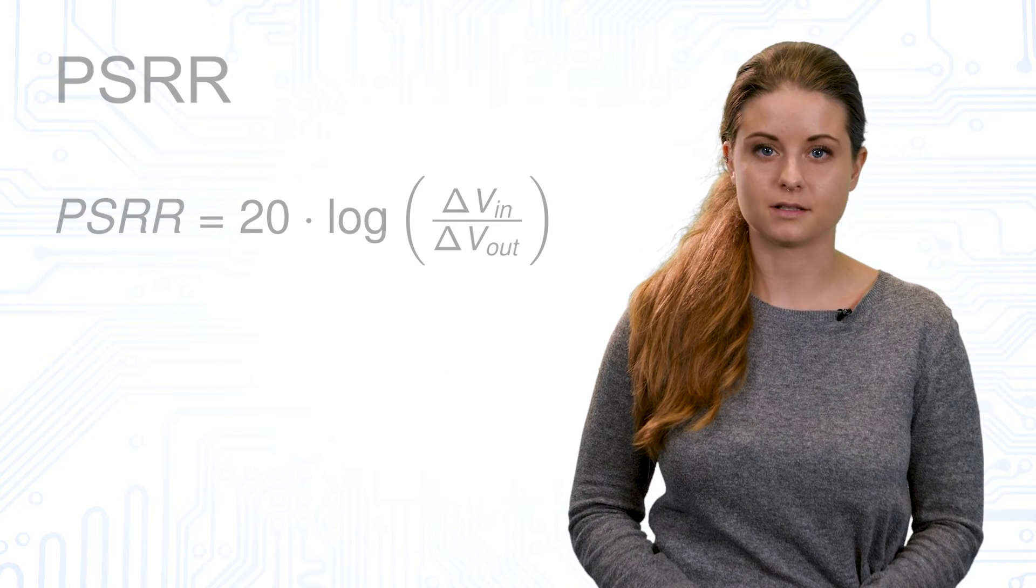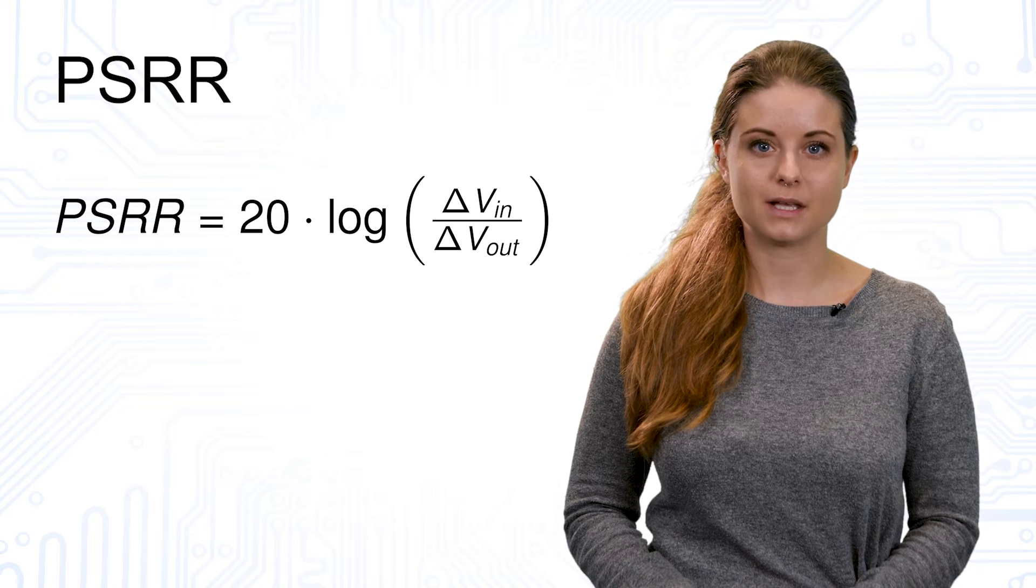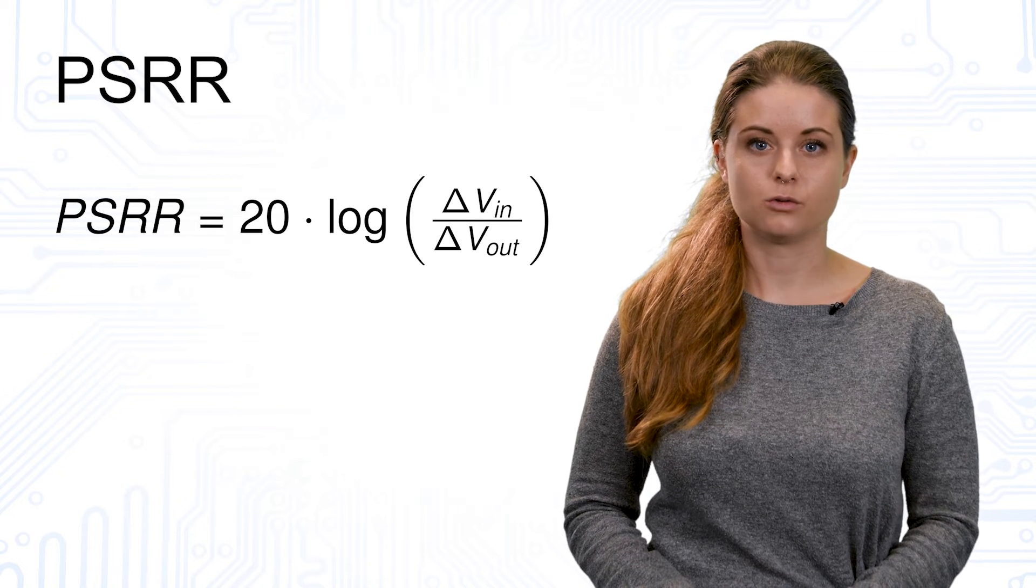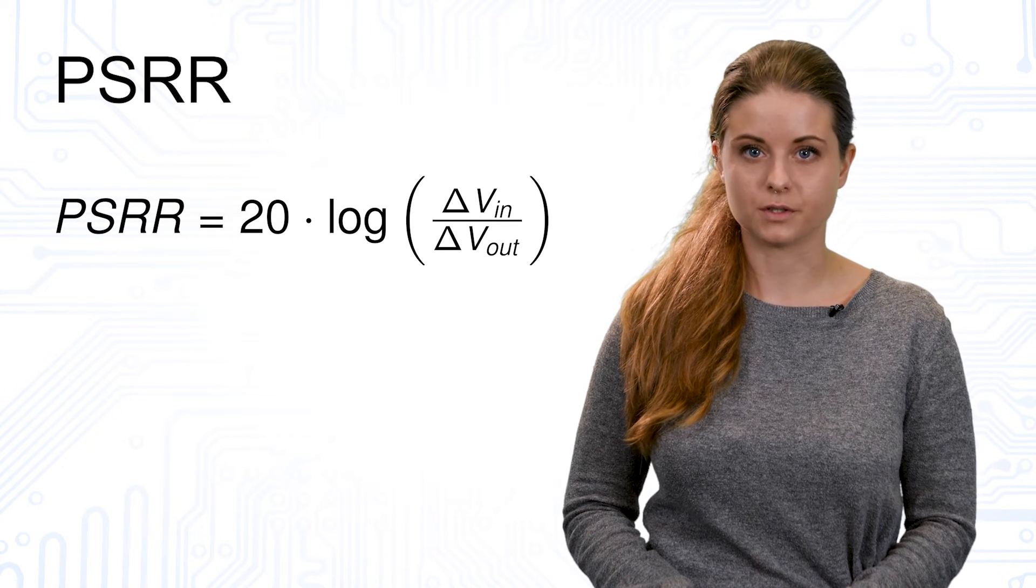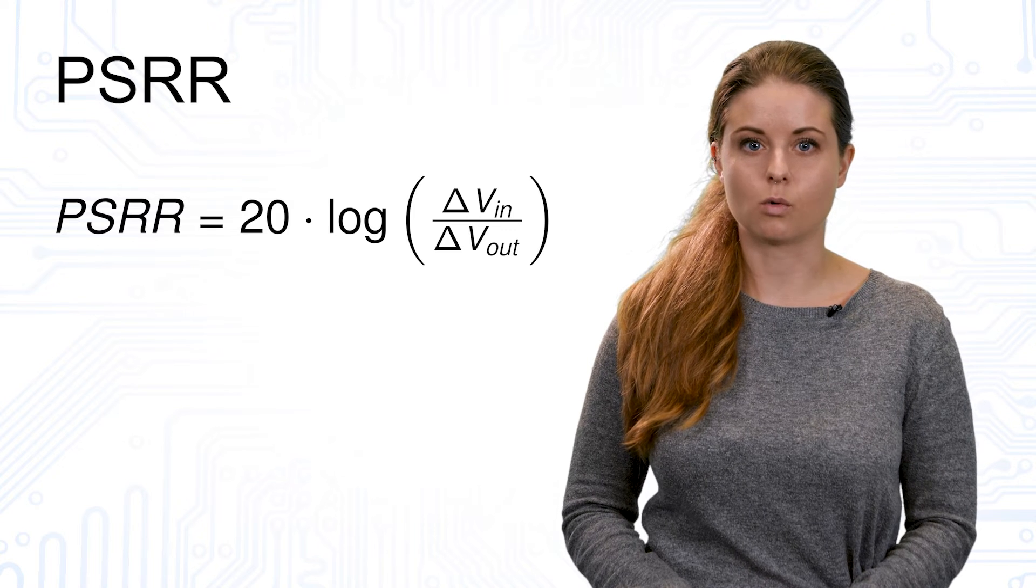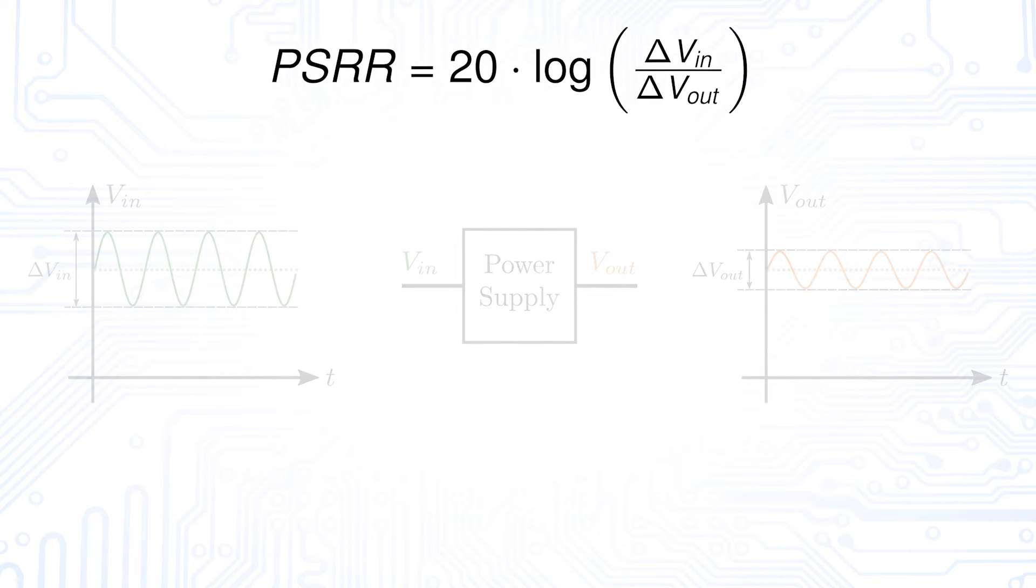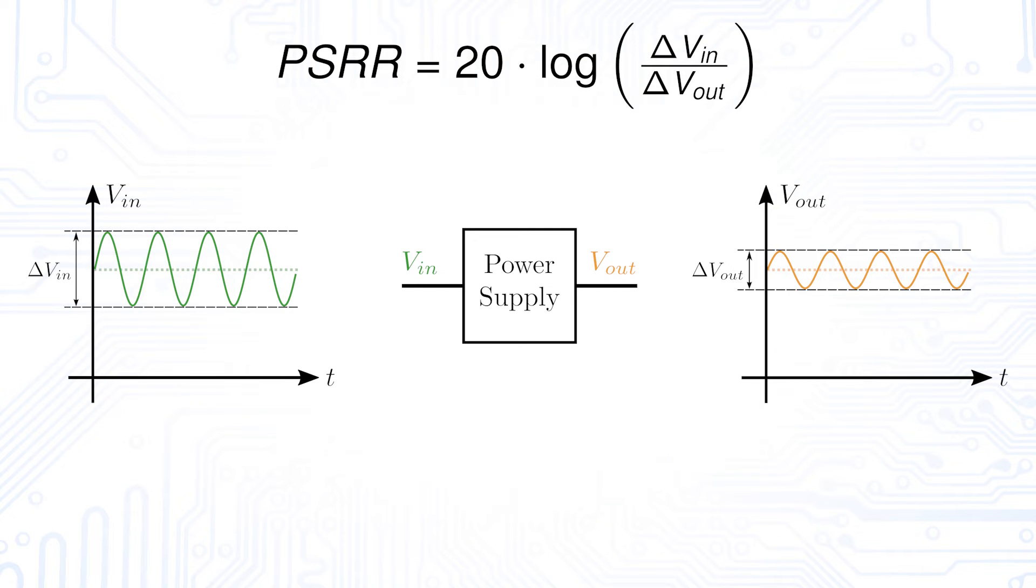Another important quantity is the power supply rejection ratio short PSRR or sometimes called ripple rejection. It describes the ability of the power supply to reject ripples from the input. The PSRR is 20 times the logarithm of ΔV_in to ΔV_out. The unit is decibel. ΔV_in is the ripple on the input voltage and ΔV_out the resulting ripple on the output.